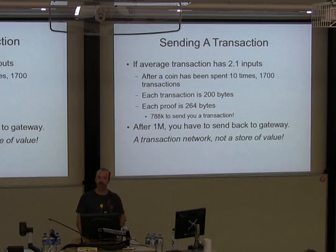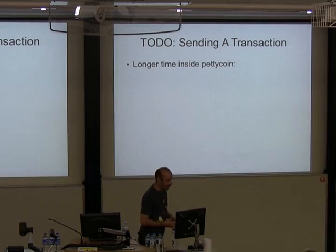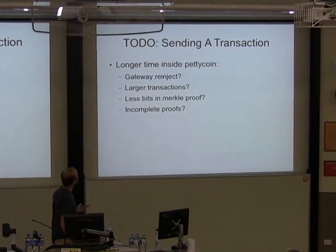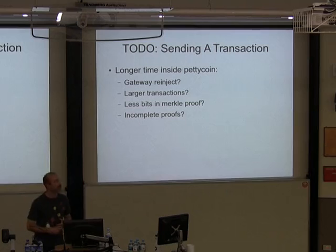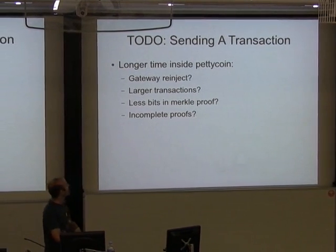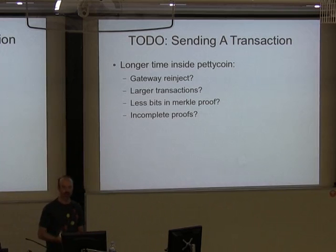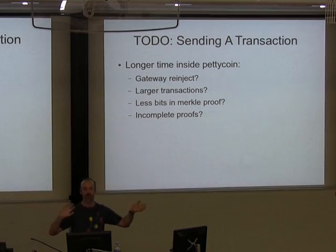Did I mention it's a transaction network, not a store of value? The solution to all the hard problems is: go back to the Bitcoin network. Now, there are some to-dos. It would be really nice to have a longer time inside Petticoin. One approach is a gateway re-inject — you might have the gateway just bounce it straight back to you rather than putting it onto the Bitcoin network and paying a transaction fee. We could allow larger transactions, say 10 meg, but you do hit diminishing returns — 10 meg gets you 13 transactions, which is not that great. We could cut the number of bits in the Merkle proof. We could allow incomplete proofs — instead of tracing all the way back to gateway transactions, if you can prove the coins have been floating around for a couple of weeks, that might be good enough.